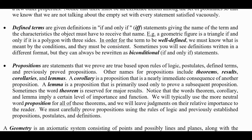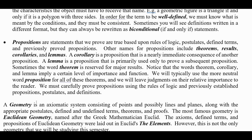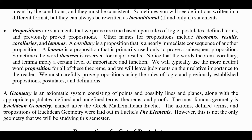We must carefully prove propositions using the rules of logic and previously established propositions, postulates, and definitions. A geometry is an axiomatic system consisting of points and possibly lines and planes, along with the appropriate postulates, defined and undefined terms, theorems, propositions, and proofs. The most famous geometry is Euclidean geometry, named after the Greek mathematician Euclid. The axioms, defined terms, and propositions of Euclidean geometry were laid out in Euclid's The Elements. However, this is not the only geometry we will be studying this semester.